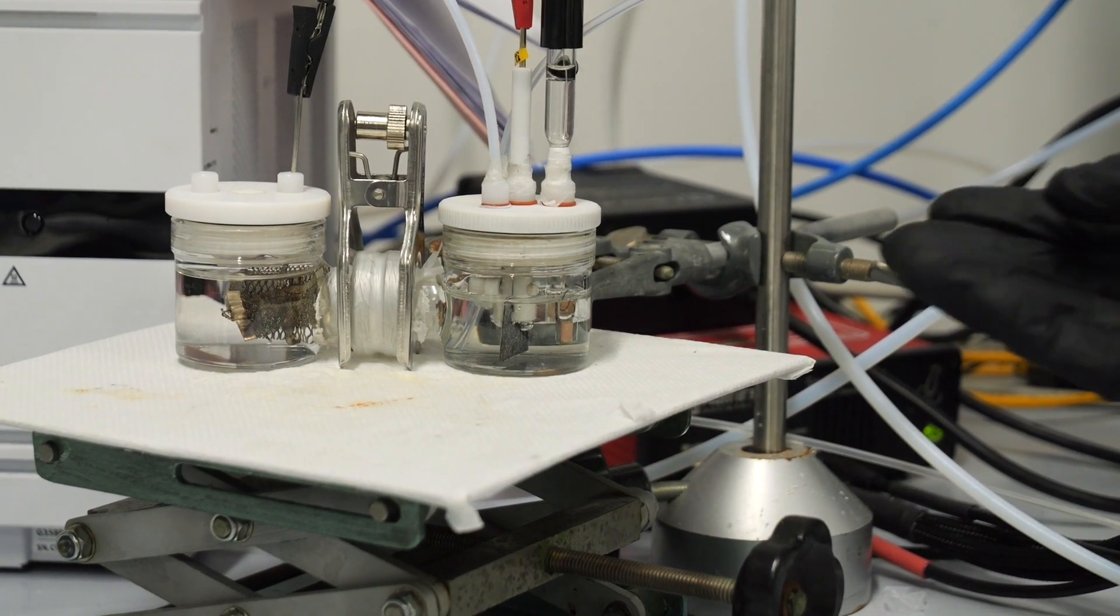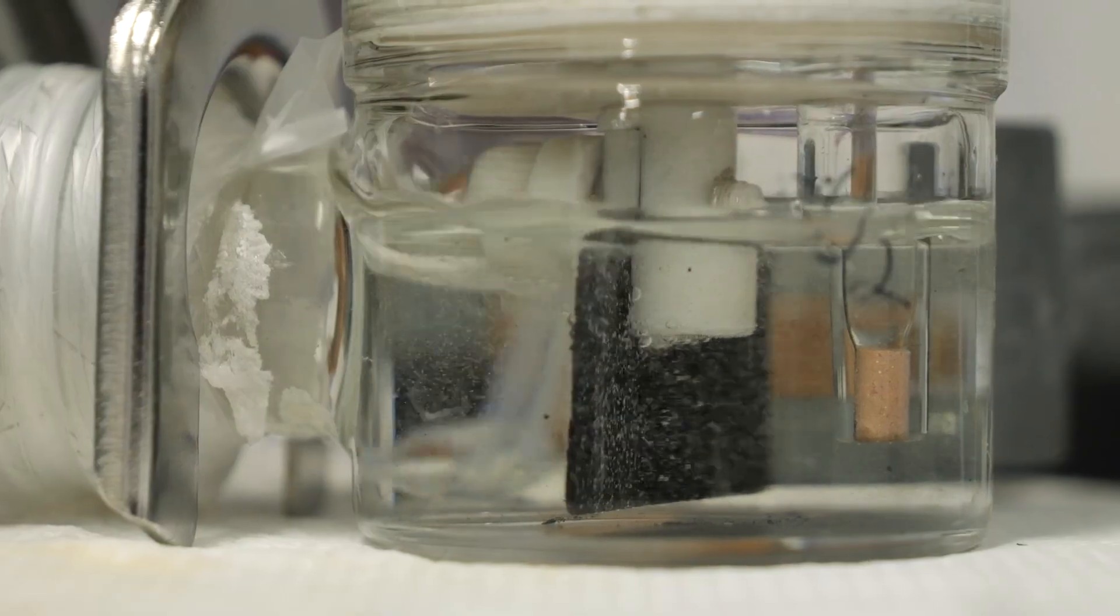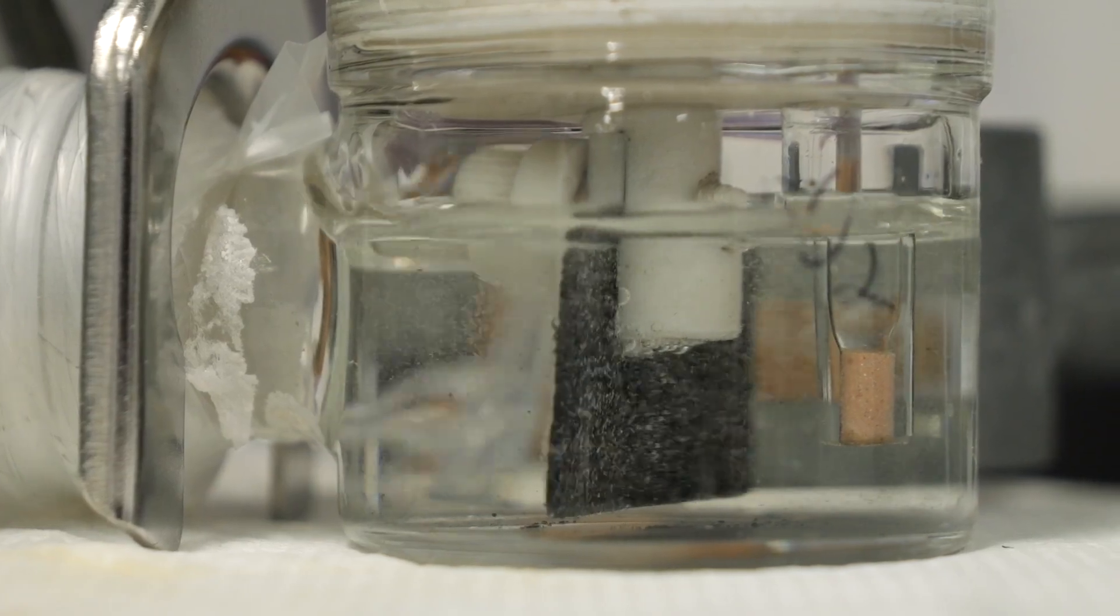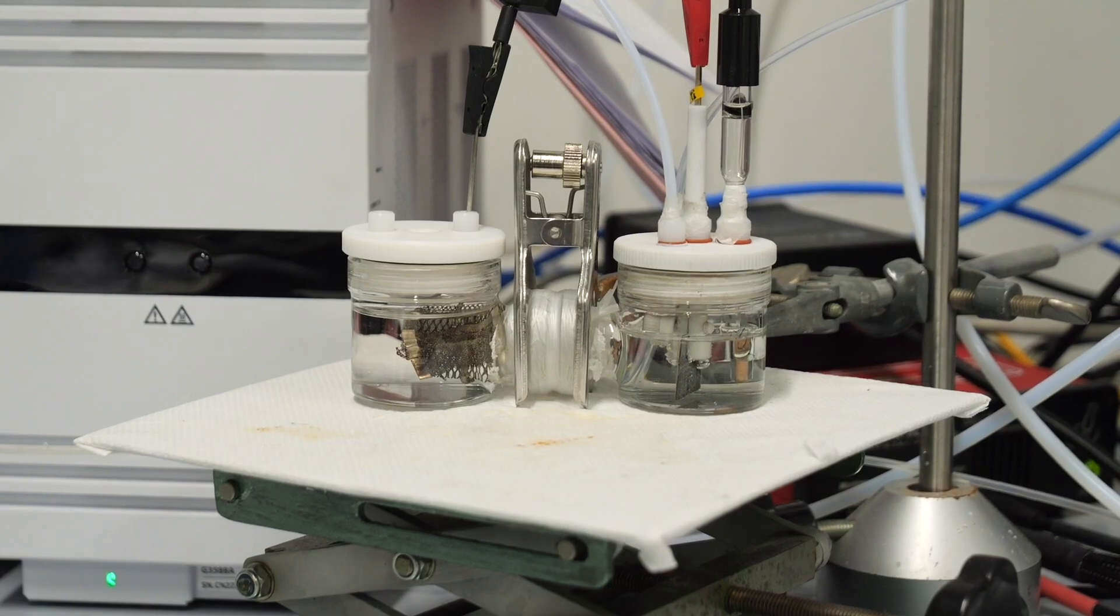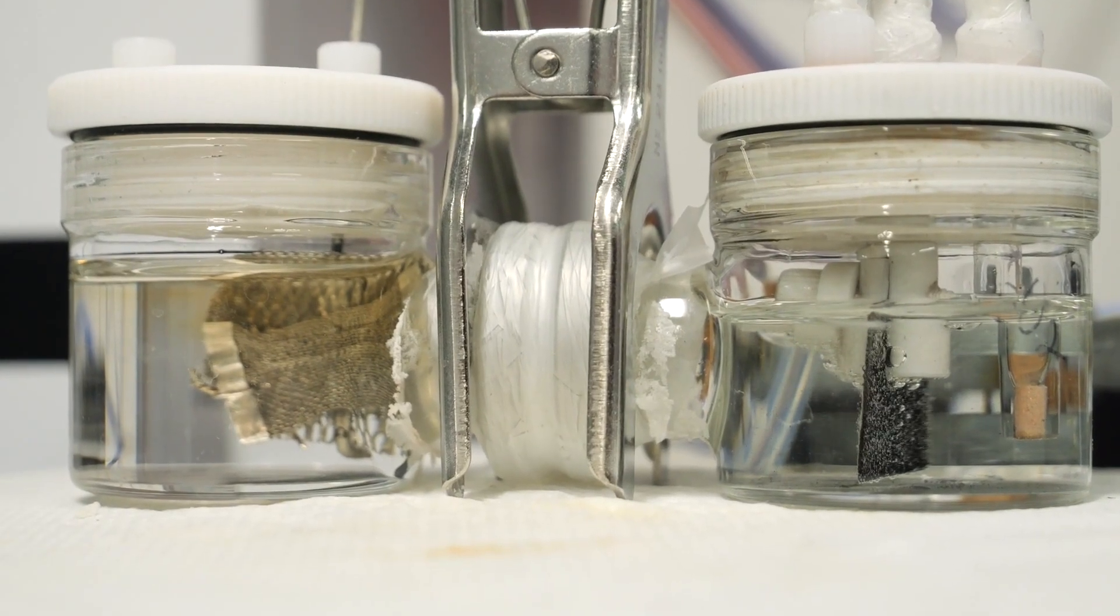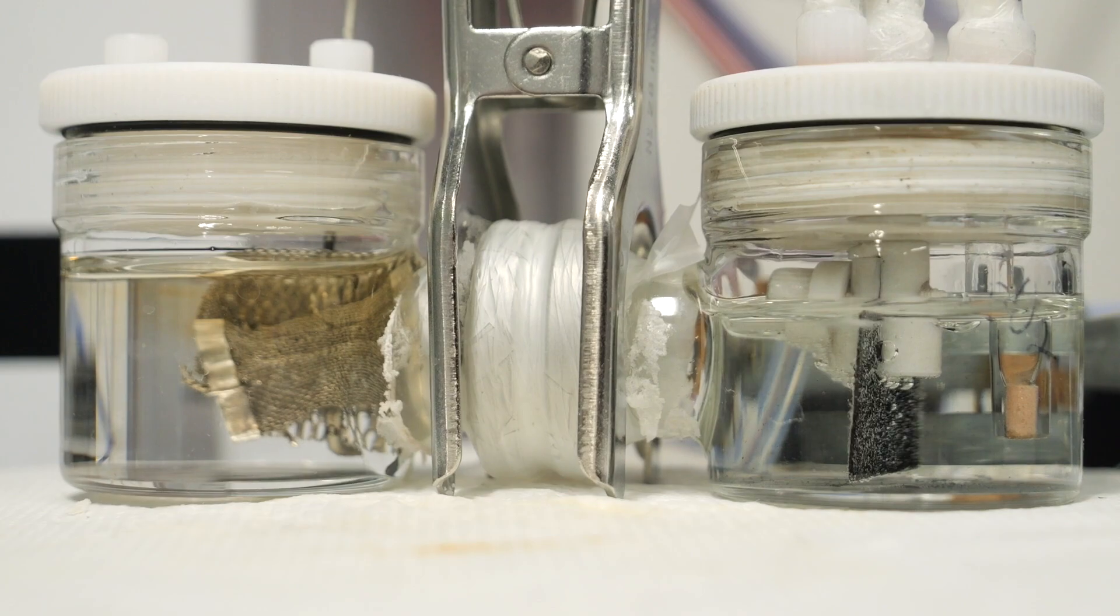On one side, we have the cathode side that is basically carbon with some catalysts. Now we are using nickel. On the other side, we have the anode side. We are using platinum as a counter electrode.